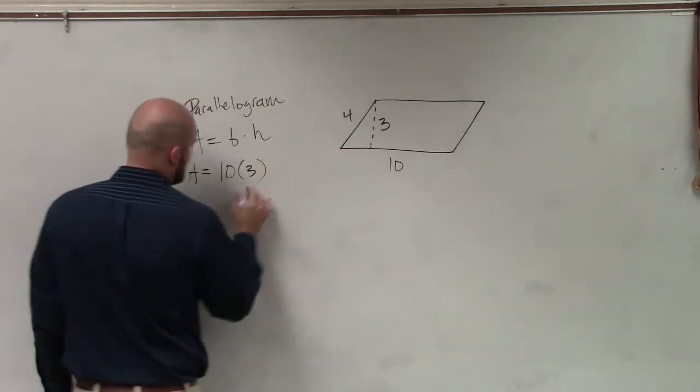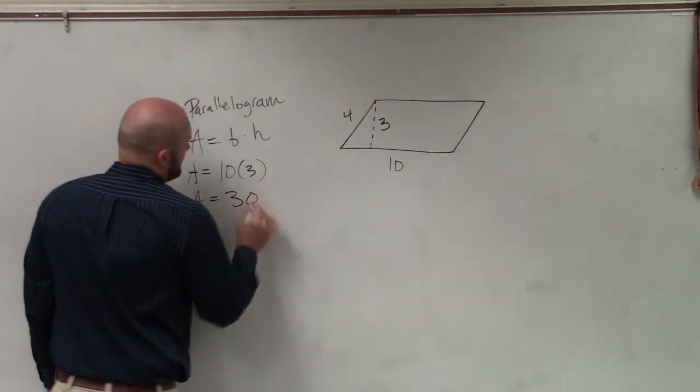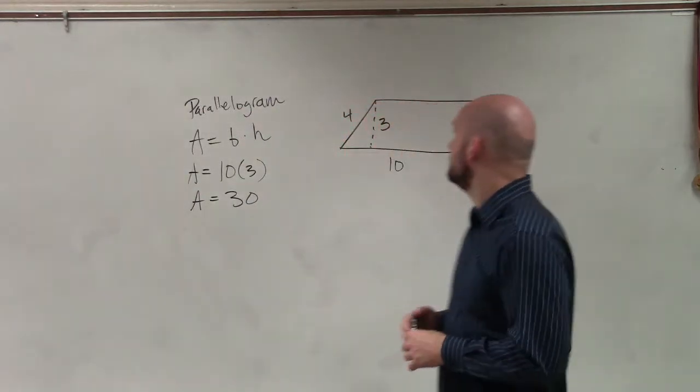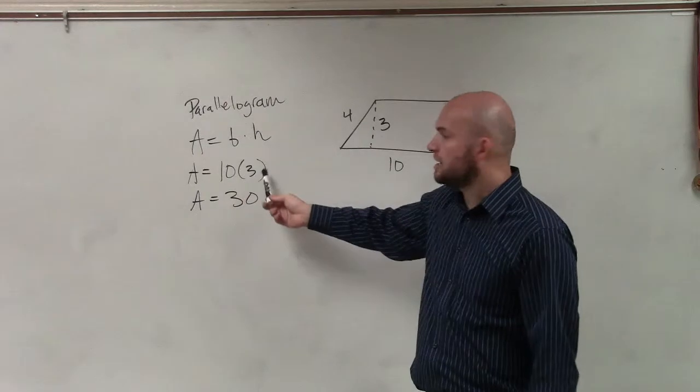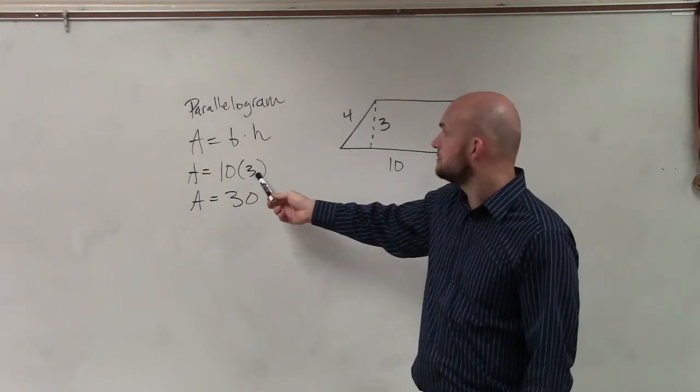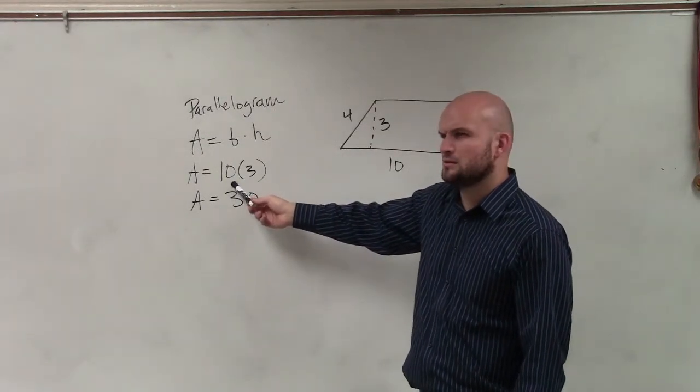So therefore, it's 10 times 3. B equals 10. And then 10 times 3, then A equals 30. Base is 10, height is 3. You got A equals 10 times 3.